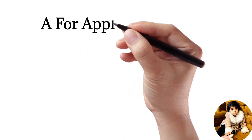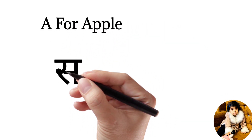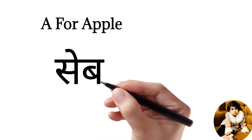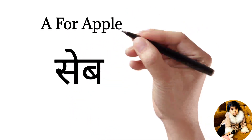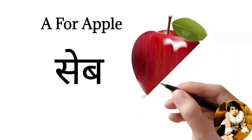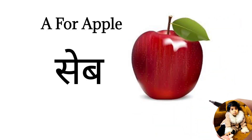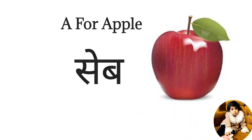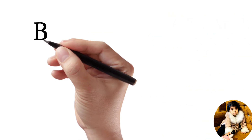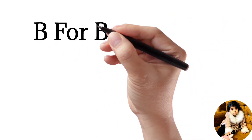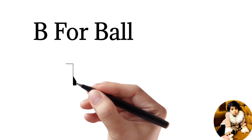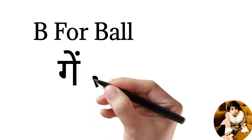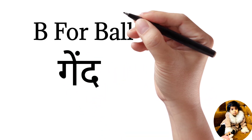A for apple, apple means shape. B for ball, ball means game.